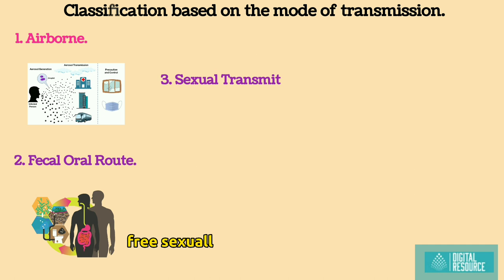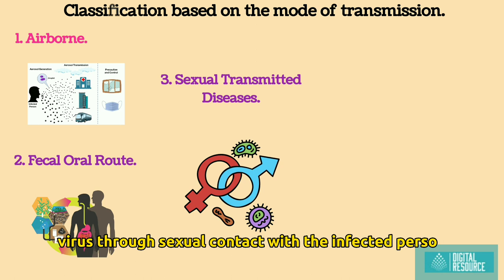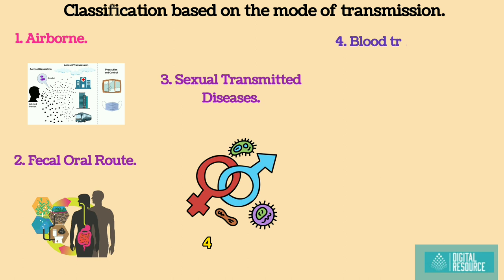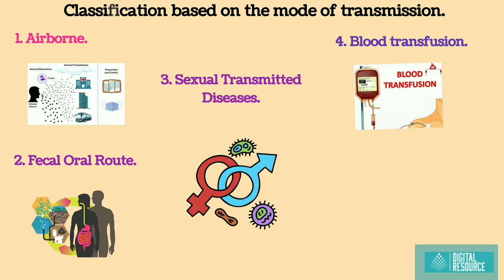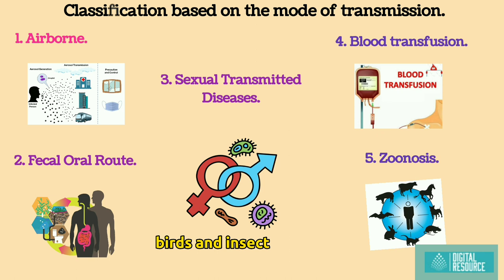3. Sexually transmitted diseases: transmission of the virus through sexual contact with the infected person, e.g. retrovirus, human papillomavirus. 4. Transfusion transmitted infections: transmission of the virus through blood transfusion, e.g. hepatitis B virus, human immunodeficiency virus. 5. Zoonoses: transmission of the virus through the biting of infected animals, birds, and insects to humans, e.g. rabies virus, alpha virus, flavivirus, ebola virus.